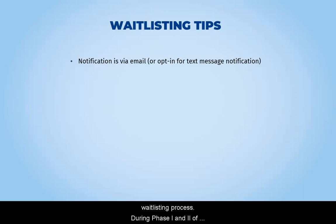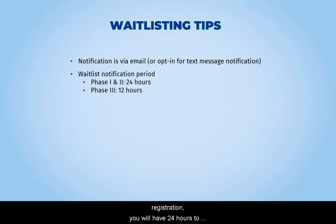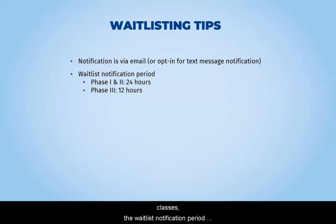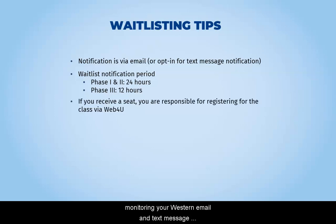During Phase 1 and 2 of Registration, you will have 24 hours to register for a class after you are notified that a seat has become available off of the waitlist. During Phase 3, which is the first 5 days of classes, the waitlist notification period is reduced to 12 hours, so make sure you are monitoring your Western email and text message notifications.